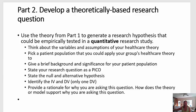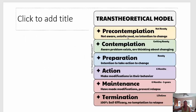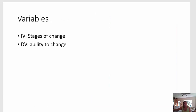For example, say I wanted to use the Trans-Theoretical Model. That model says that people change their behavior based on their readiness to change. In pre-contemplation, they're not aware and have no intention to change. In contemplation, they're thinking there's a problem and maybe they should change. In preparation, they're getting ready to change. In the action phase, they're making modifications to their behavior. In maintenance, they've made the change and are doing everything necessary to prevent relapse. In termination, they're 100% sure they will never go back to their old behavior.